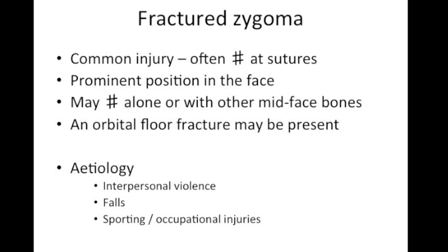After the nasal bones, the zygoma is the most commonly fractured bone in the face. The zygoma serves as a shock absorber for the cranium to absorb any forces, and for this reason it is in a prominent position in the face. A zygomatic fracture may occur alone or in combination with other facial bone fractures; an orbital floor fracture may complicate a zygomatic fracture. As with mandibular fractures, the commonest cause is interpersonal violence.